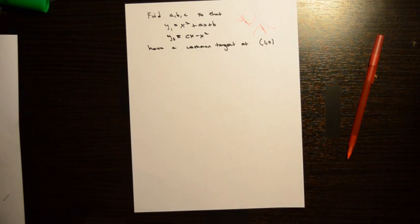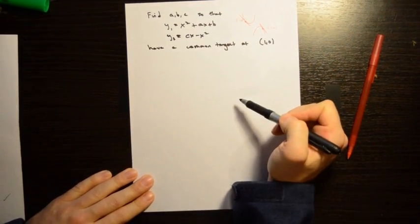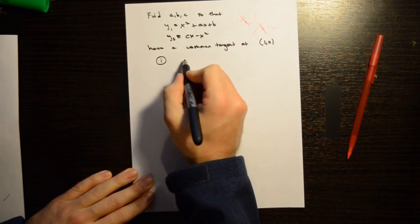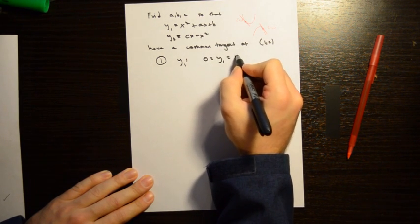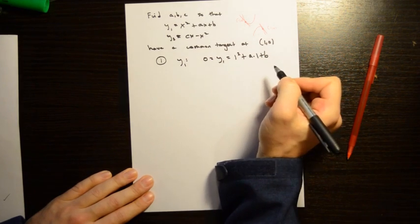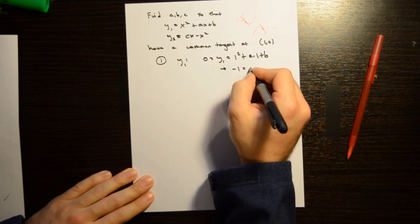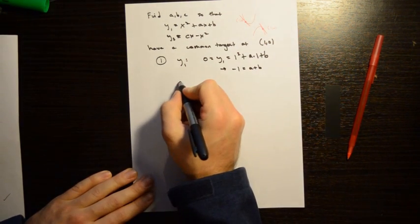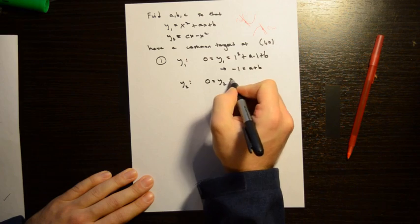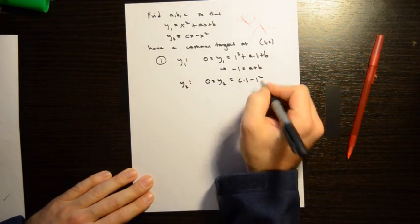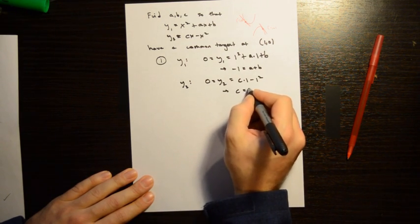The first thing we do is enforce that both parabolas satisfy the point (1, 0). From the y1 equation: 0 = 1² + a·1 + b, giving us the relationship a + b = -1. From the y2 equation: 0 = c·1 - 1², which gives us right away that c = 1.